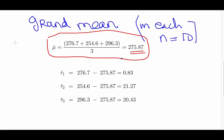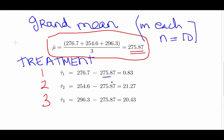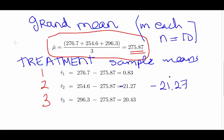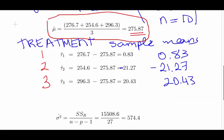The grand mean is 275.87. For the three treatment effects, the estimates are simply the sample means for each group minus the grand mean. That gives tau-hat 1 = −21.27, tau-hat 2 = 0.83, and tau-hat 3 = 20.43. When you add those all up — allowing for a little rounding error — they should cancel out and sum to zero.